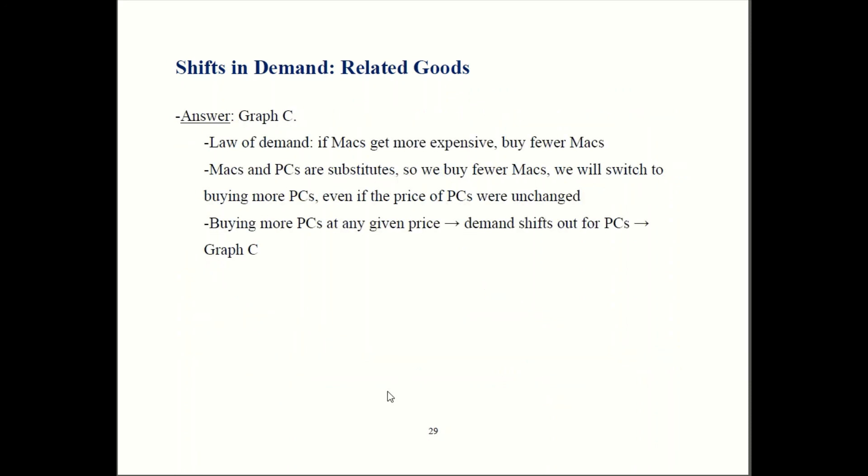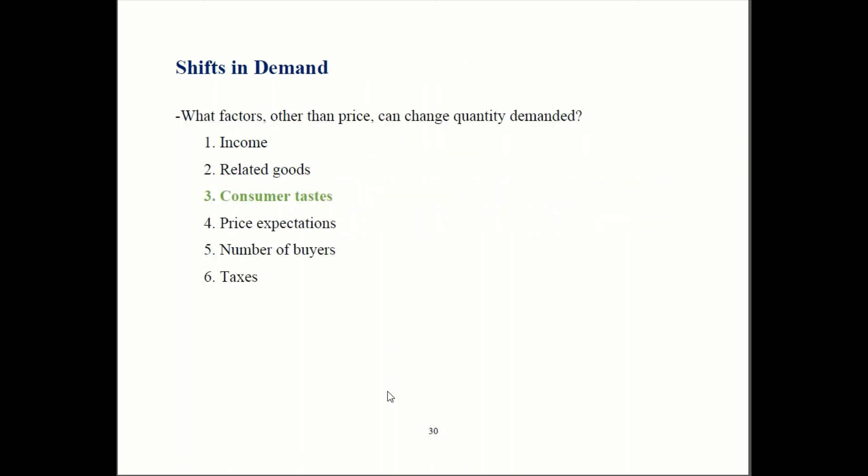That's how you work through these related goods problems. You first look at what does the law of demand tell me for the original good, then you figure out how it's going to influence the market for the related good. That's how income and related goods influence demand.